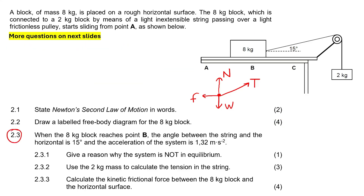This question says: when the 8kg block reaches point B, the angle between the string and the horizontal is 15 degrees and the acceleration of the system is 1.32. Give a reason why it's not in equilibrium. Equilibrium is only when you have Newton's first law — when the object is either not moving or moving at constant velocity. When you have constant velocity, acceleration is zero. But here there is an acceleration, so it can't be at equilibrium. We can simply say acceleration is not zero.